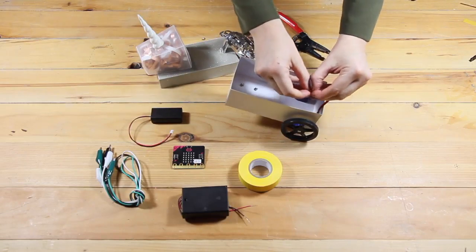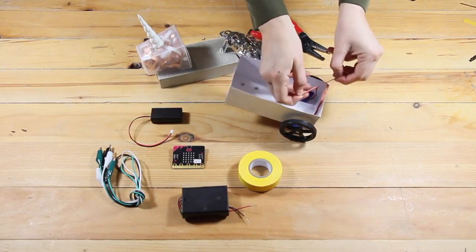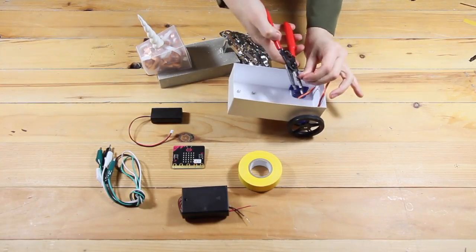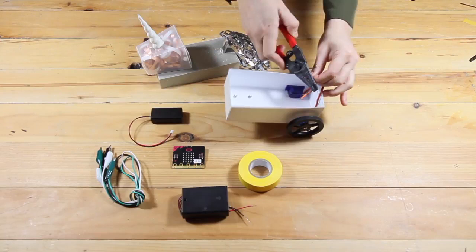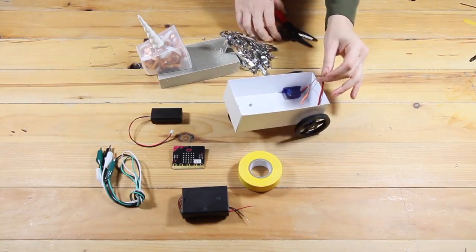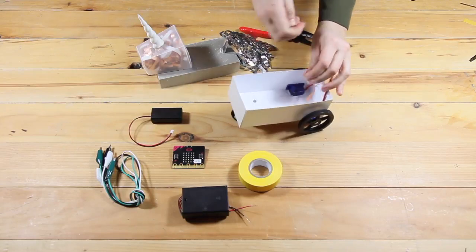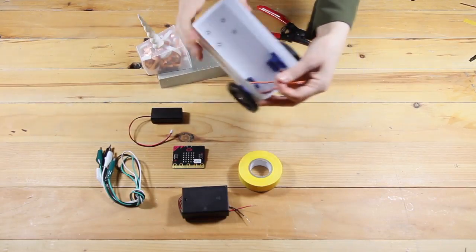Now take the wires coming out of the servo and pull them apart gently until you have three individual wires. Strip the ends of the wire so there's a little bit of bare wire showing through, maybe half a centimeter to a centimeter long.